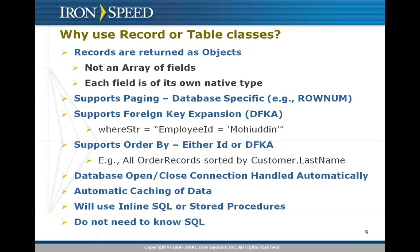So why use the record or table classes? The reason is that records are returned as objects and not an array of fields, and each field has its own native type. The benefit is that you are operating in a very clean and strongly typed environment rather than in an array of fields.